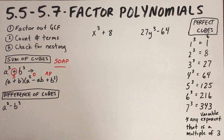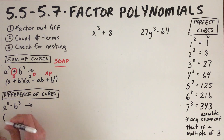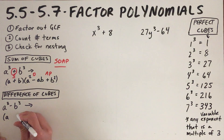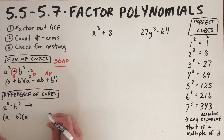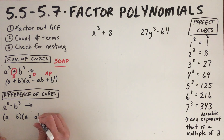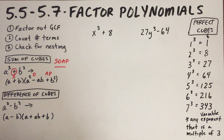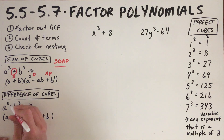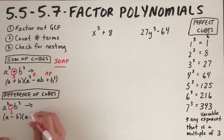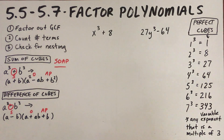The difference of cubes factors exactly the same way — a binomial times a trinomial with a's and b's in the same positions, and the second parenthesis squared on both ends. The signs are again SOAP: Same, Opposite, Always Positive. Since this sign is negative, the first sign in the trinomial is the same (negative), then opposite (positive), then always positive. That is our formula for difference of cubes.